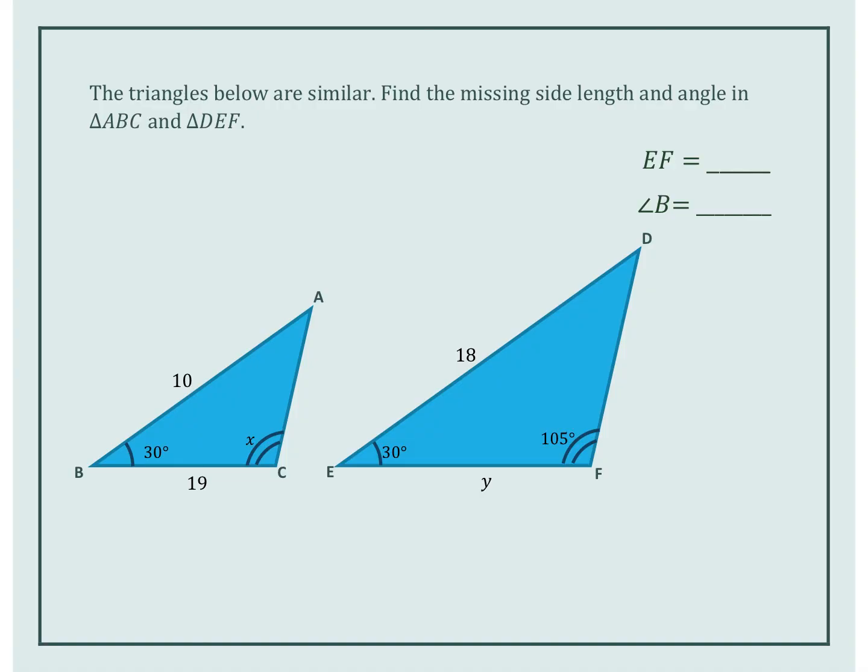Again, we're going to go back to matching it up. So matching it up, AB matches DE. AB is proportional to DE. What else do we have?